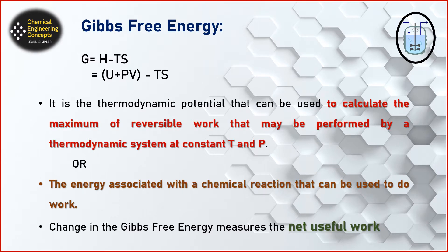So, Gibbs free energy — this formula is very common. Everyone knows G = H - TS, and we know the enthalpy term is U + PV. Gibbs free energy is basically a thermodynamic potential that can be used to calculate the maximum reversible work that may be performed by a thermodynamic system at constant temperature and pressure.